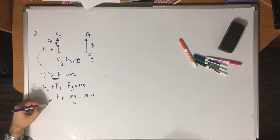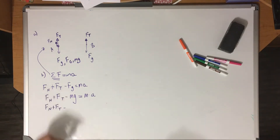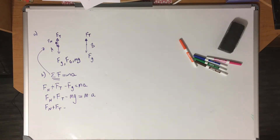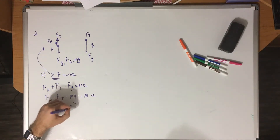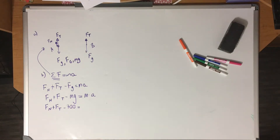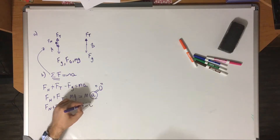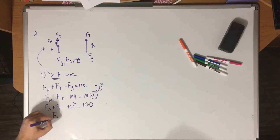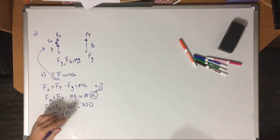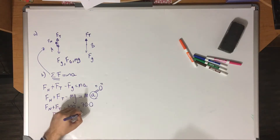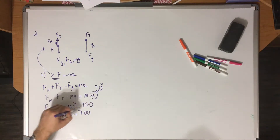Student A is stationary — he's not moving up or down. So if there is no movement, acceleration is zero. So 70 times zero equals zero. FN plus FT minus 700 equals zero. That negative 700 goes to the other side, giving us FN plus FT equals 700 Newtons. So I have one equation: normal force plus tension equals 700. If I know the tension, I can find the normal force.